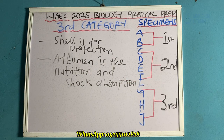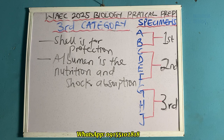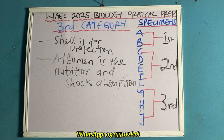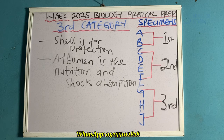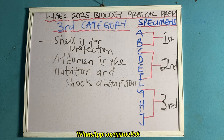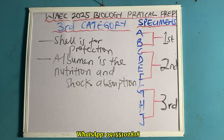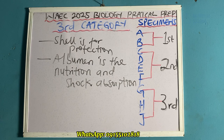Those are the likely questions for this category. Kindly copy all this down and add it to whatever you are studying. If you have not watched the first or second category videos, comment below. Best of luck in your exam — by the special grace of God, your biology Y825 objective, theory, and practical will land you an A1. Type amen in the comment section.